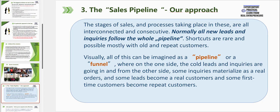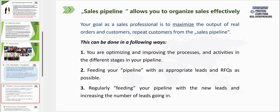Normally, all new leads and inquiries are flowing through the whole sales pipeline, and shortcuts are really rare and mostly possible with old and repeat customers. And visually, all of this can actually be very well imagined as a pipeline or as a funnel — where on one side, the cold leads and inquiries are going in, and from the other side, some inquiries materialize as real orders, and some leads become real customers and even repeat customers.